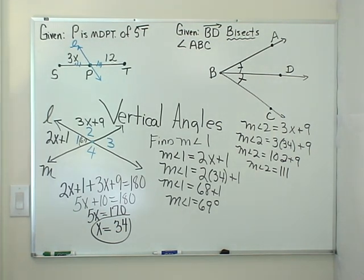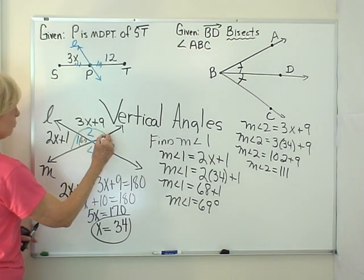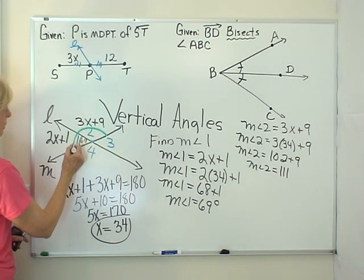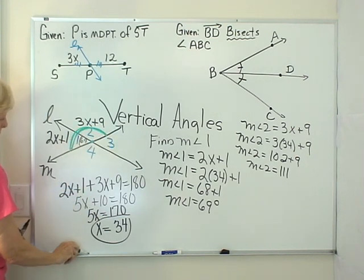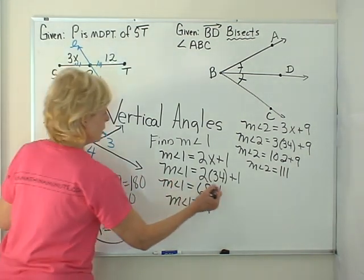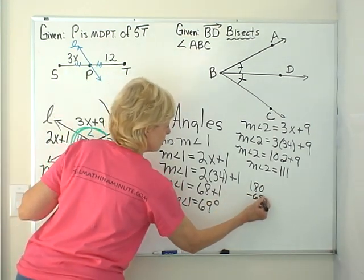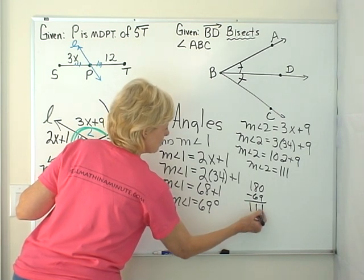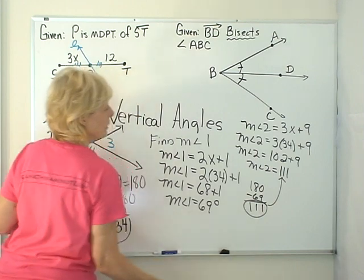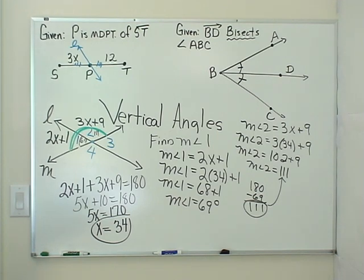Now what is one way that we could check that? What is another way that we could have found that? These two angles, angle 1 and angle 2, we said a while ago, are a linear pair. And they are supplementary, which means they should add up to 180. So if I take 69 and I subtract it from 180, 9 from 10 is 1 and 6 from 7 is 1, I get 111, which is what I got that way. So it is true that 111 and 69 add up to give you 180 degrees.